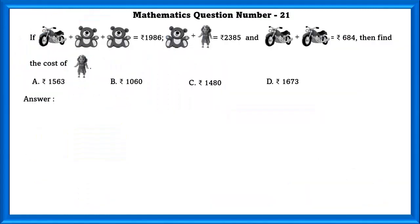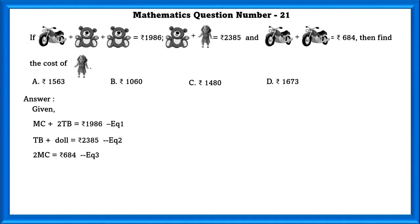Class 4 IMO Level 2, Mathematics question number 21. If motorcycle plus teddy bear plus teddy bear is equal to 1986, teddy bear plus doll is equal to 2385, and motorcycle plus motorcycle is equal to 684, then find the cost of doll.